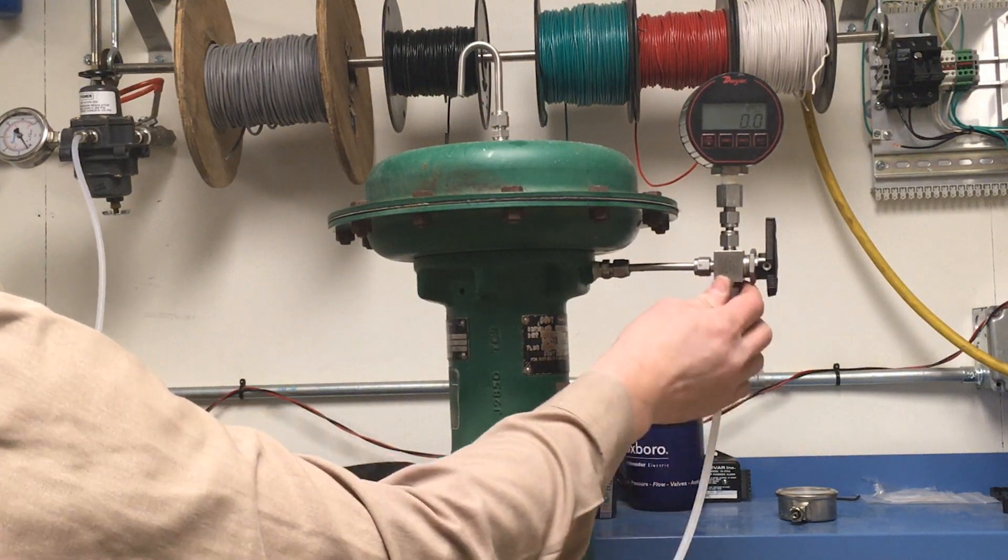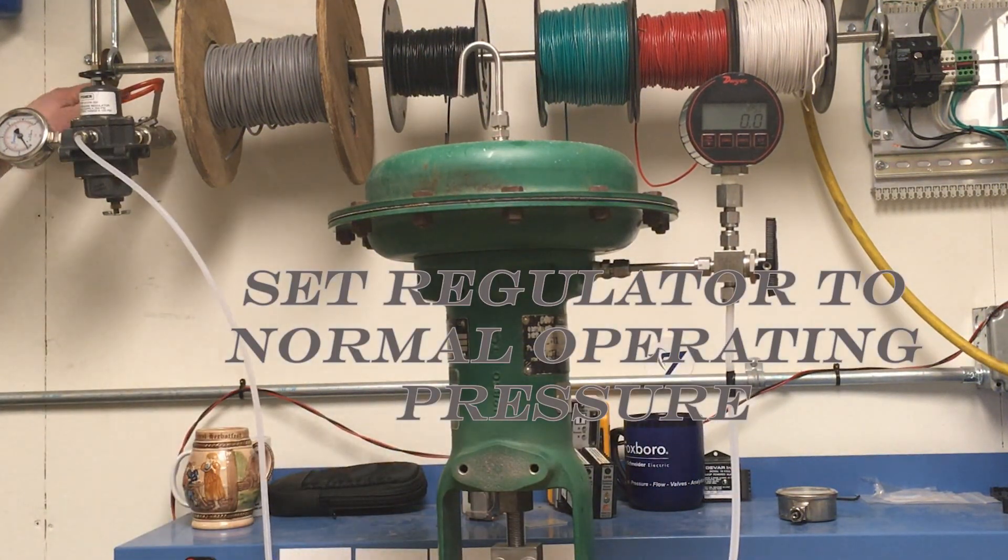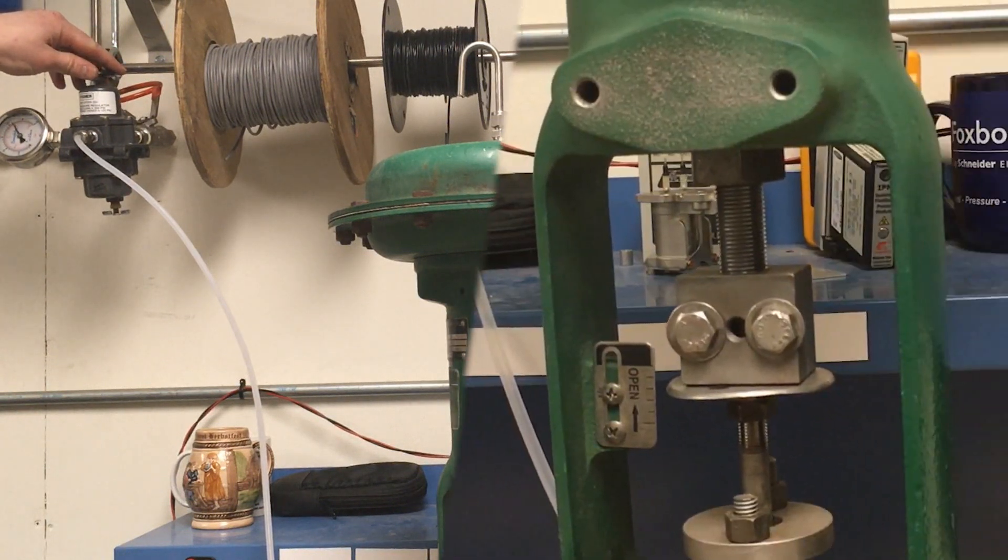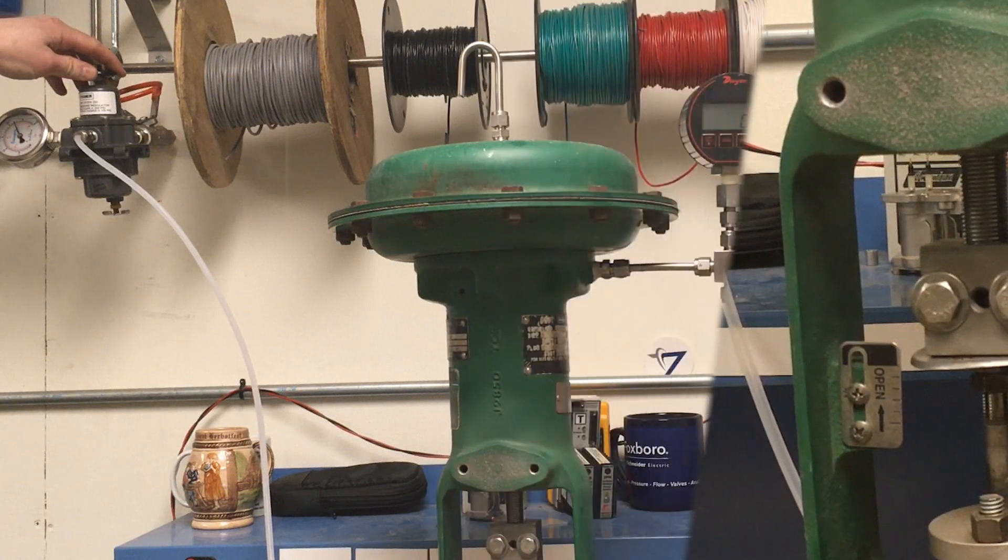The regulator should be adjusted to the normal operating pressure for the control valve. Once air is applied to the actuator, wait for the valve to reach its max travel position.